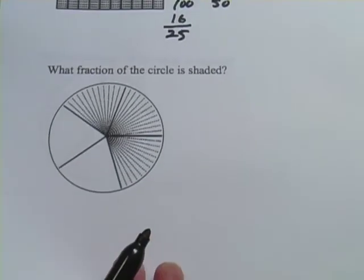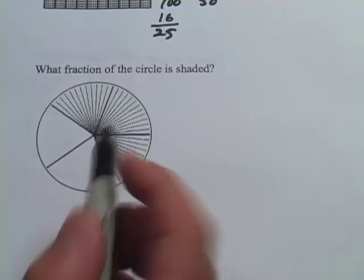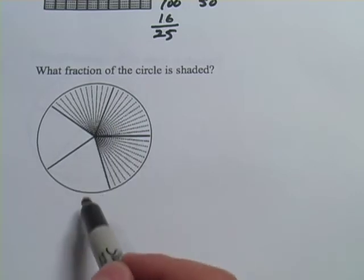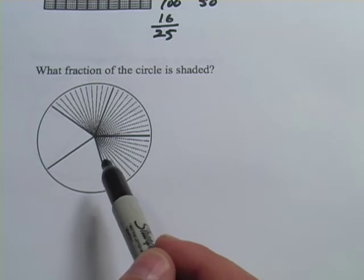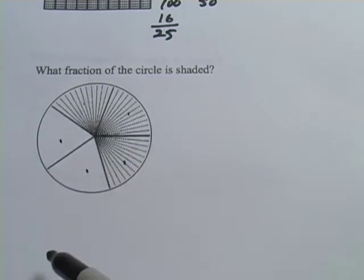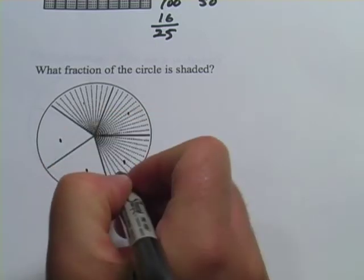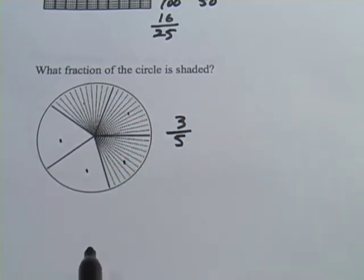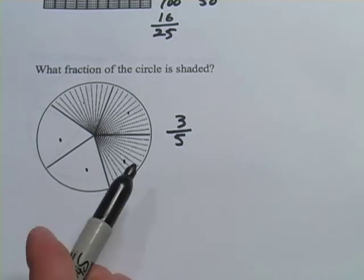All right, let's look at this next one. It says what fraction of the circle is shaded. And the circle is split up here into a certain number of pie pieces, and they all look even, so I'm just going to count the number of pie pieces. We've got 1, 2, 3, 4, 5. So three of them are shaded out of a total of five. It's three-fifths of the circle is shaded. That was pretty easy.